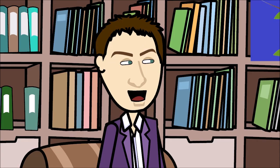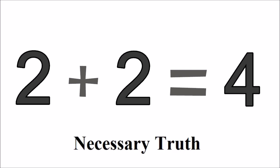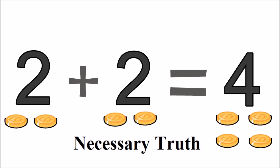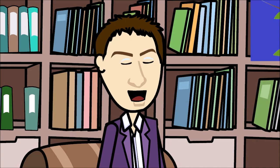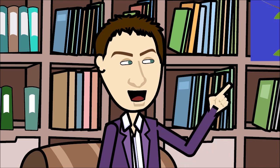So, let's say the statement '2 plus 2 equals 4' — this is a necessary truth. Because if you have 2 of something and another 2 of something, you would have 4 of something. To deny this is a logical contradiction. To say '2 plus 2 does not equal 4' is a contradiction. 2 plus 2 always equals 4, no matter what the state of affairs are that obtain.